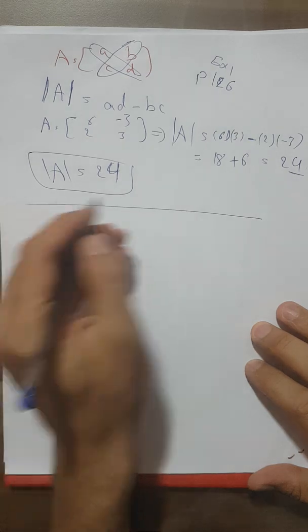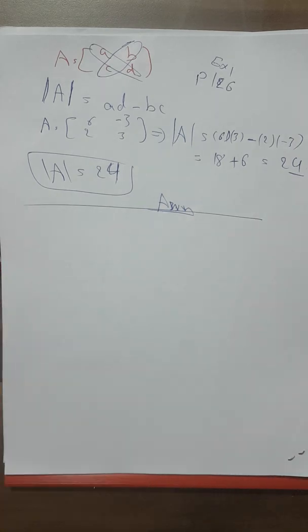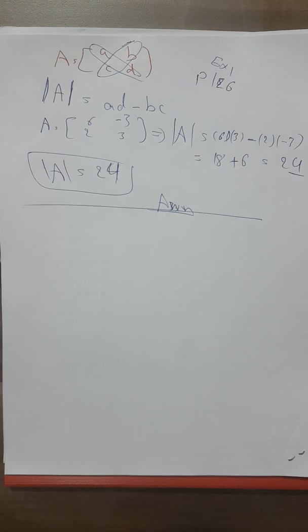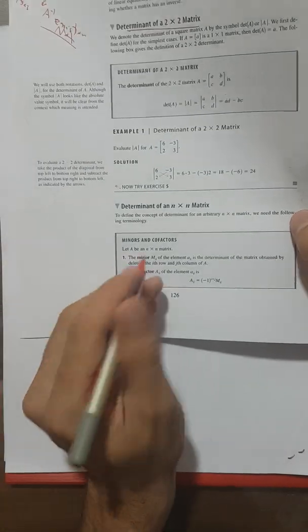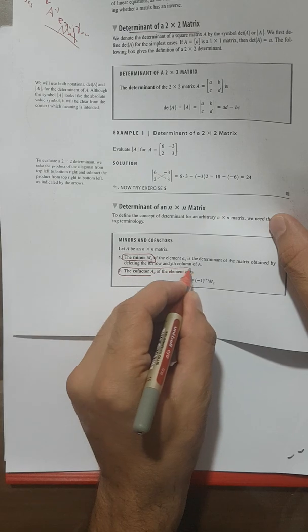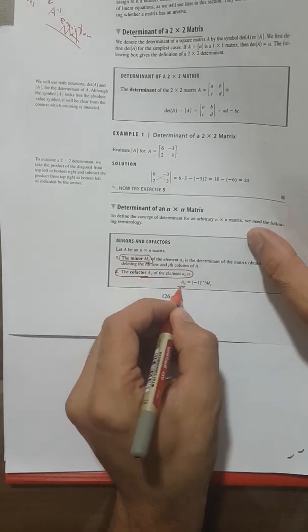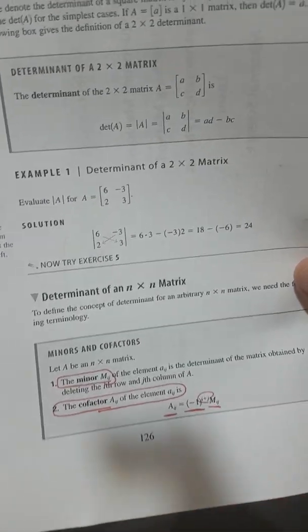Now, how about the determinant for a 3×3 or n×n matrix? If we have n×n with more than two variables, to find such a determinant we need two concepts from your lecture: the minor — the matrix of minors — and the cofactor. The cofactor equals (-1)^(i+j) times M_ij. This is not easy at first but the example will show you it's straightforward.